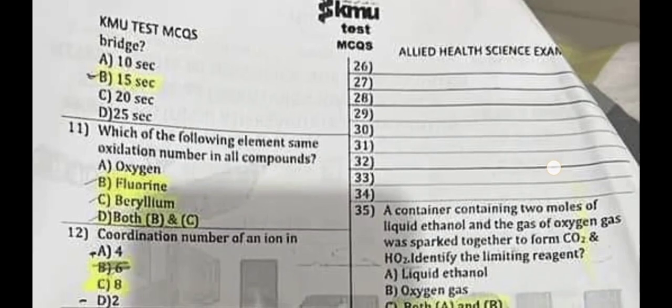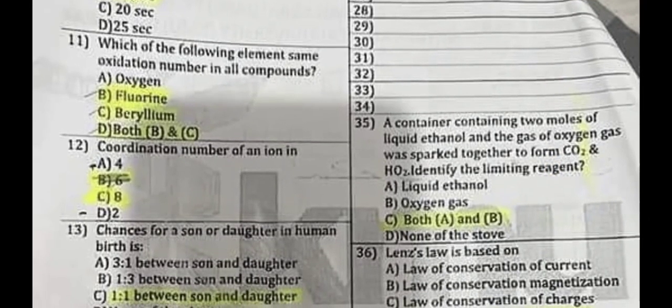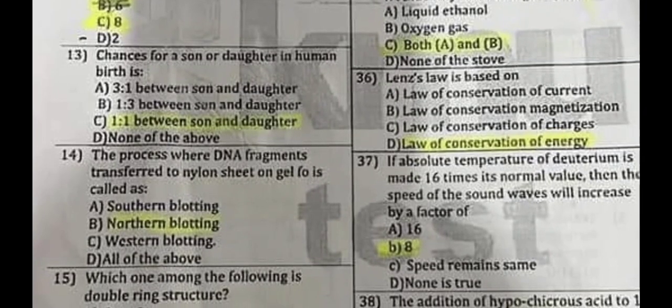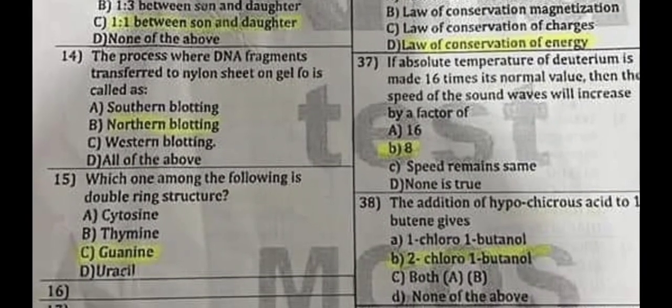Question number 13: The coordination number of an ion is C: 8. The chances for a son or daughter in human birth are C: 1:1. Question number 14: The process where DNA fragments are transferred to a nylon sheet on gel is called B: Northern blotting. Question number 15: Which one of the following is a double-ring structure? The correct answer is C: guanine.